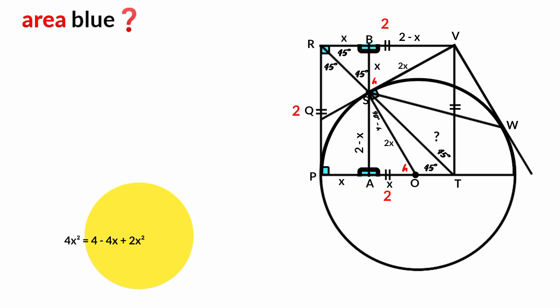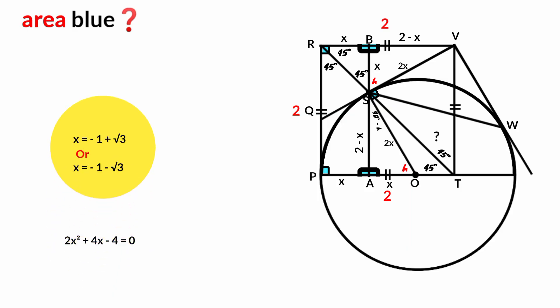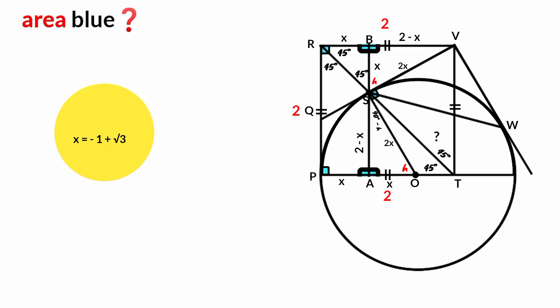Combining: x² plus x² is 2x², and 4x² equals 2x² plus 2x². The 2x² terms cancel, giving 2x² = 4 minus 4x. Rearranging: 2x² + 4x minus 4 = 0. This is a quadratic equation. Using the quadratic formula: x = minus 1 plus root 3, or x = minus 1 minus root 3. Since x is a length it cannot be negative, so we discard the second solution. Therefore x = root 3 minus 1.